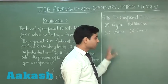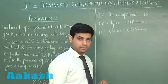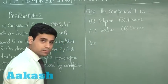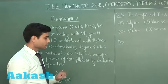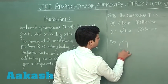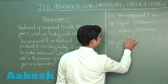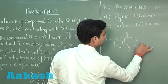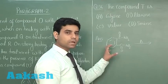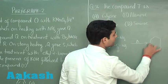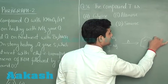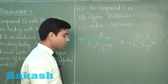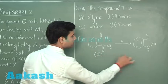The next question asks what compound T is, with options: glycine, alanine, valine, and serine. In this case, Q gave S. Compound Q was phthalamide, which on strong heating removes ammonia, resulting in the formation of phthalimide. So this is our compound Q and this is our compound S.